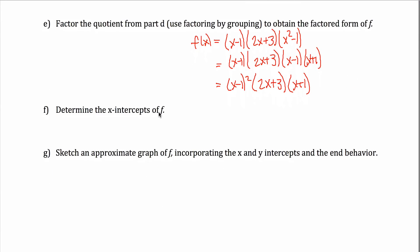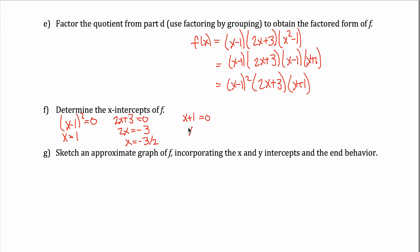Part F asks for the x-intercepts of f. Now that we have the factored form, that's easy. X-intercepts occur when f(x) = 0. Setting each factor to zero: (x − 1)² = 0 gives x = 1; (2x + 3) = 0 gives x = −3/2; and (x + 1) = 0 gives x = −1. So I have x-intercepts at 1, −3/2, and −1. Note that x = 1 has multiplicity 2, which is relevant when sketching the graph.